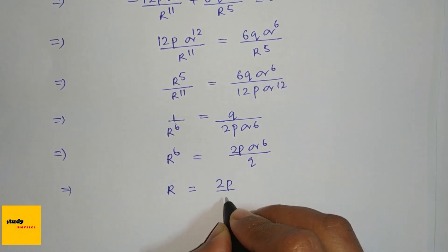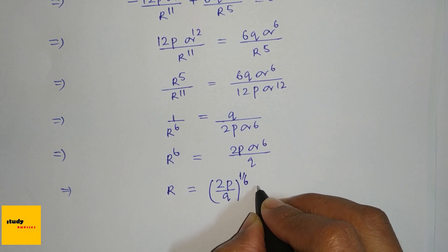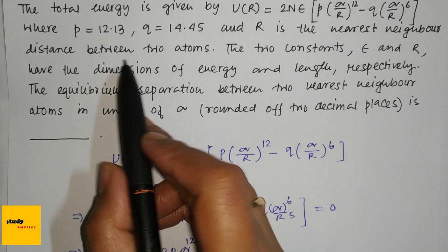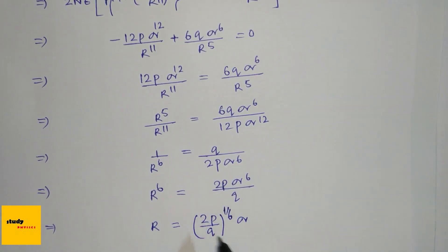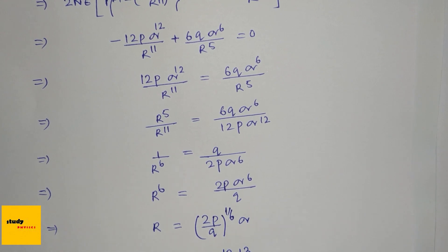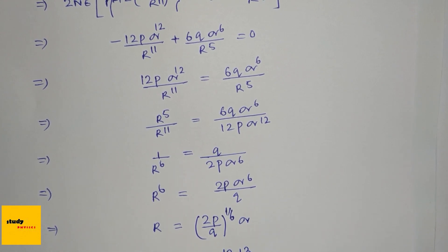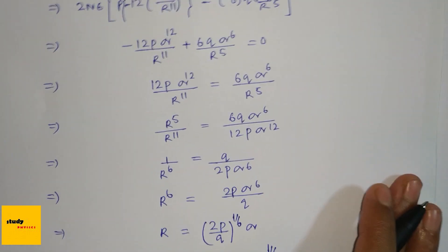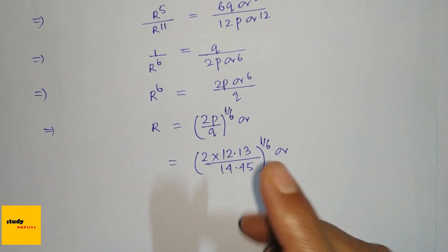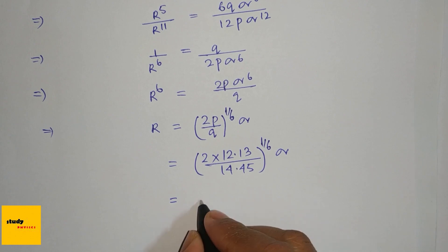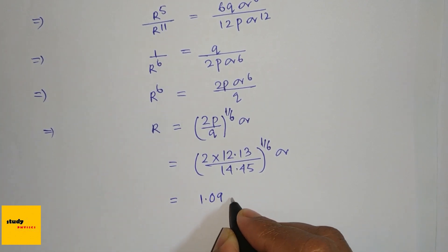R equals (2p/q)^(1/6) × σ. Substituting the values: (2×12.13/14.45)^(1/6) × σ. If we calculate this, we find 1.09σ.